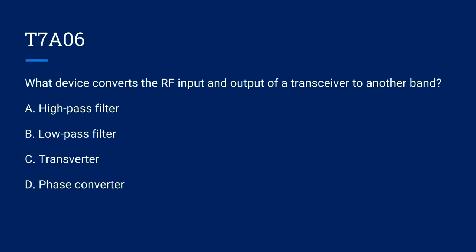T7A06. What device converts the RF input and output of a transceiver to another band? A. High Pass Filter. B. Low Pass Filter. C. Transverter. Or D. Phase Converter. The correct answer is C. Transverter.